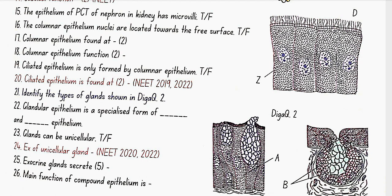Ciliated epithelium is only formed by columnar epithelium. No, this is false. It is formed by both cuboidal and columnar.